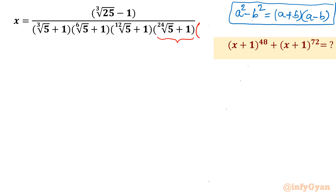So that bracket's conjugate would be the 24th root of 5 minus 1. This is the most important step for solving this problem. We multiply by the 24th root of 5 minus 1 in both the numerator and denominator.